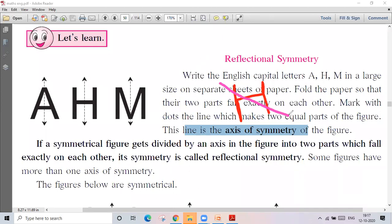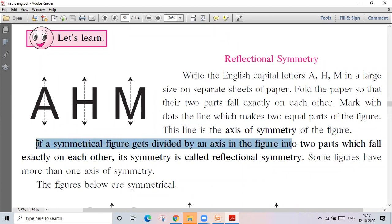The basic thing you should know: if a symmetrical figure gets divided by an axis in the figure into two parts which fall exactly on each other, its symmetry is called reflectional symmetry.